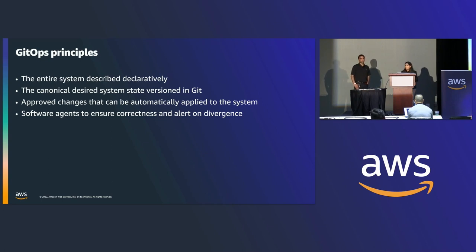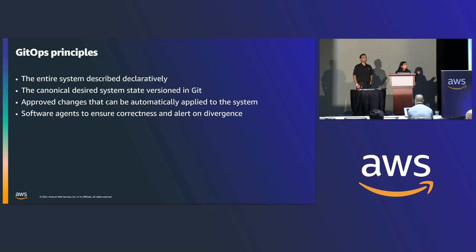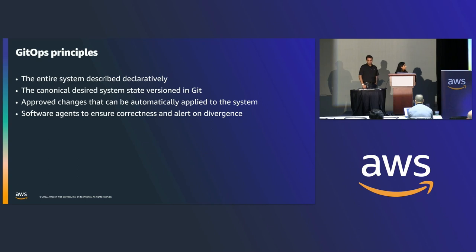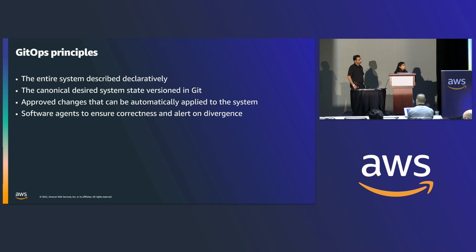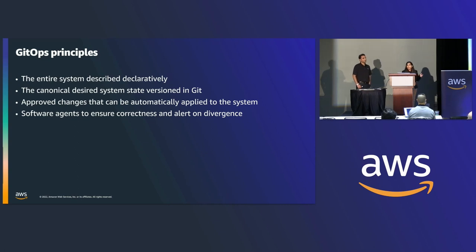Applying a change to the system is as simple as creating a PR, getting it approved and merged. Once it is merged, the agent running within the cluster — which monitors the Git repositories — pulls in that change and applies it to the cluster. The last principle is that the software agent running within the cluster detects any divergences caused by inadvertent manual changes and reconciles the system back to the state defined in Git. Reverting to a previous state is as simple as doing a Git revert.